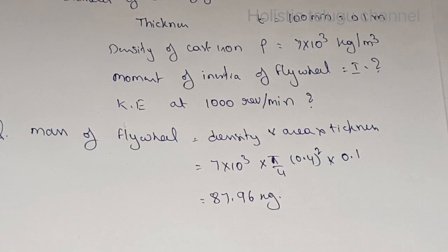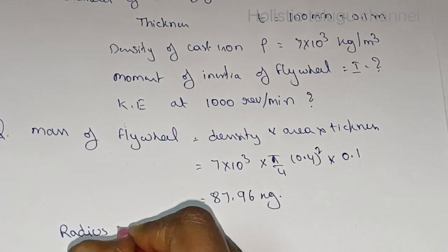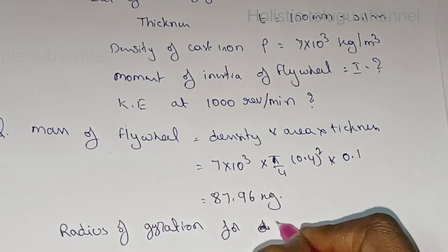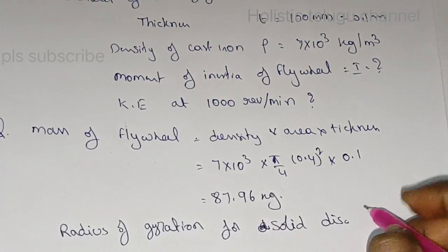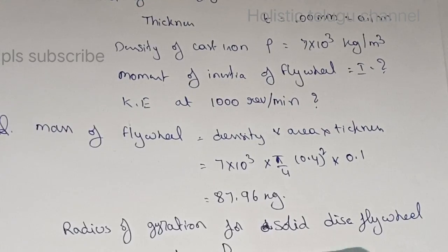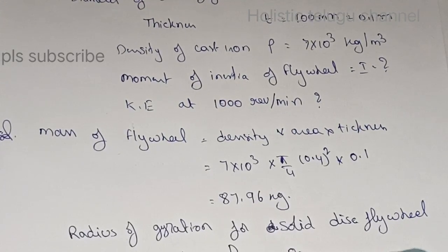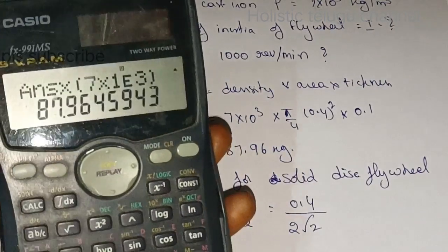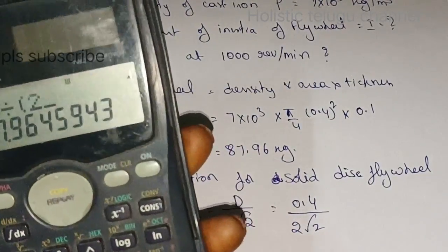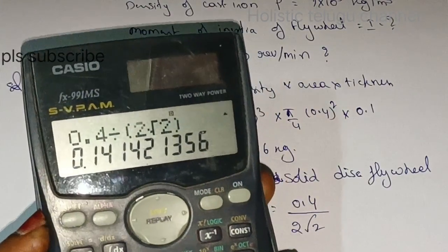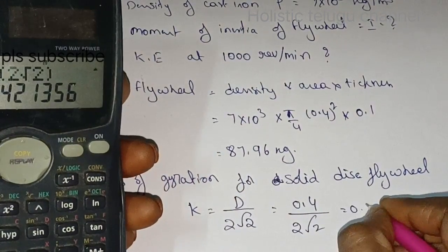Next, for a solid disk flywheel, the radius of gyration k equals d divided by 2 root 2. So k equals 0.4 divided by 2 root 2. Calculating gives radius of gyration k equal to 0.1414 meters.